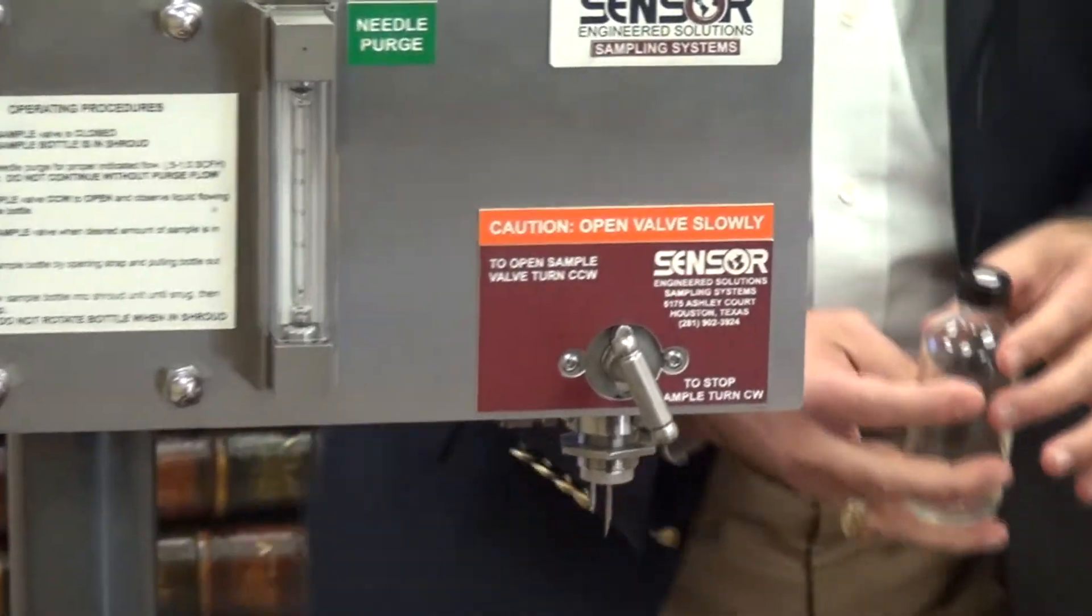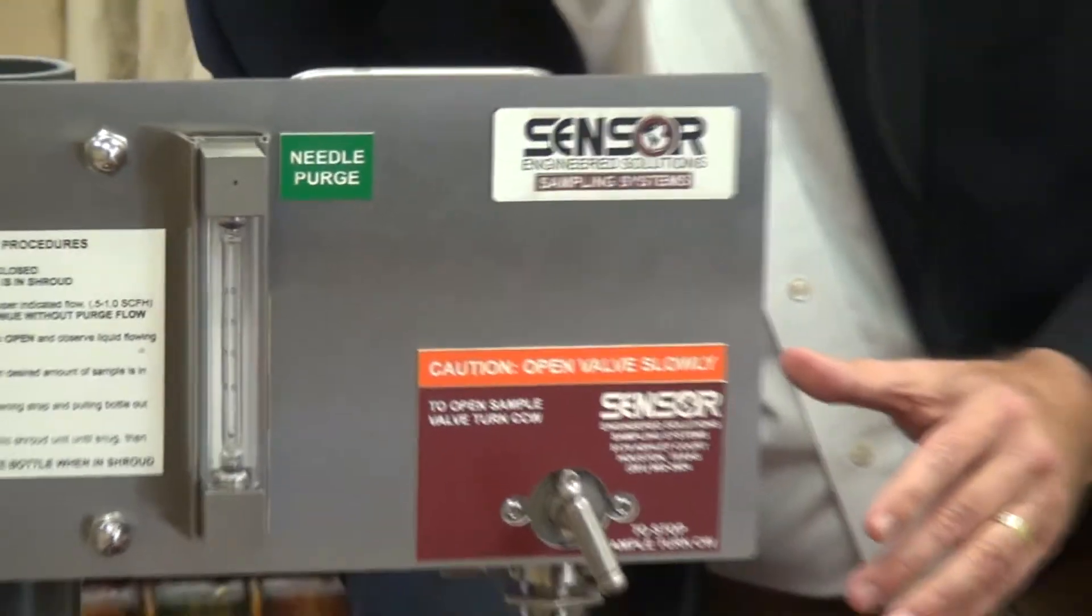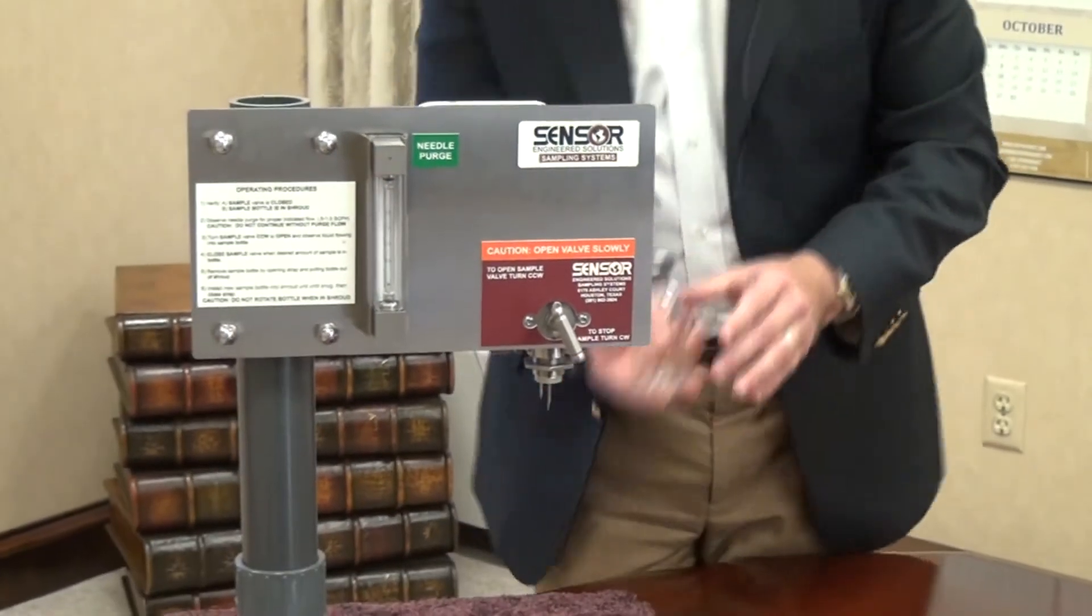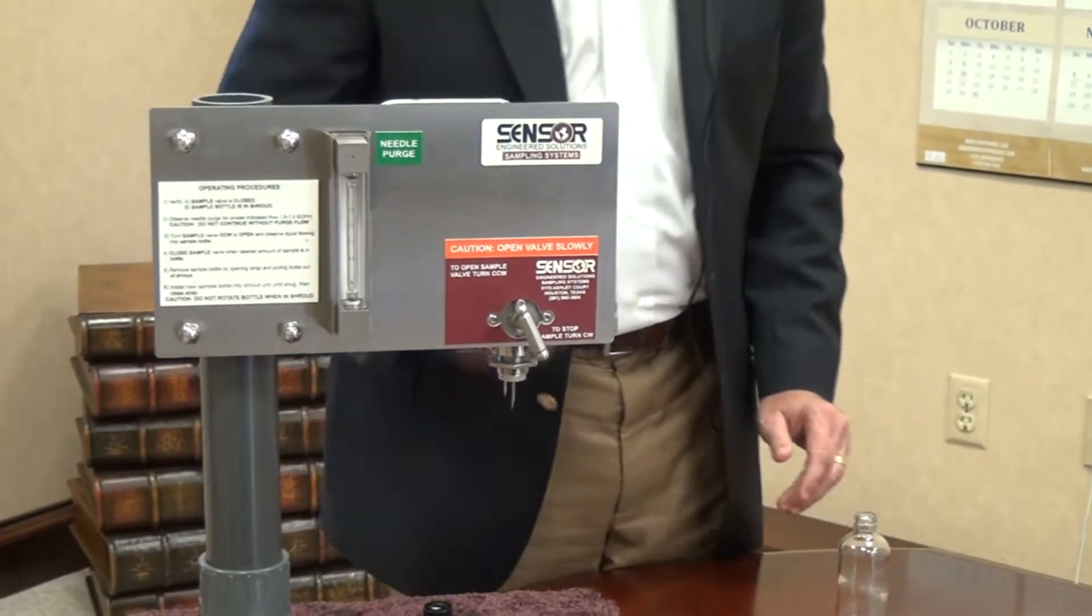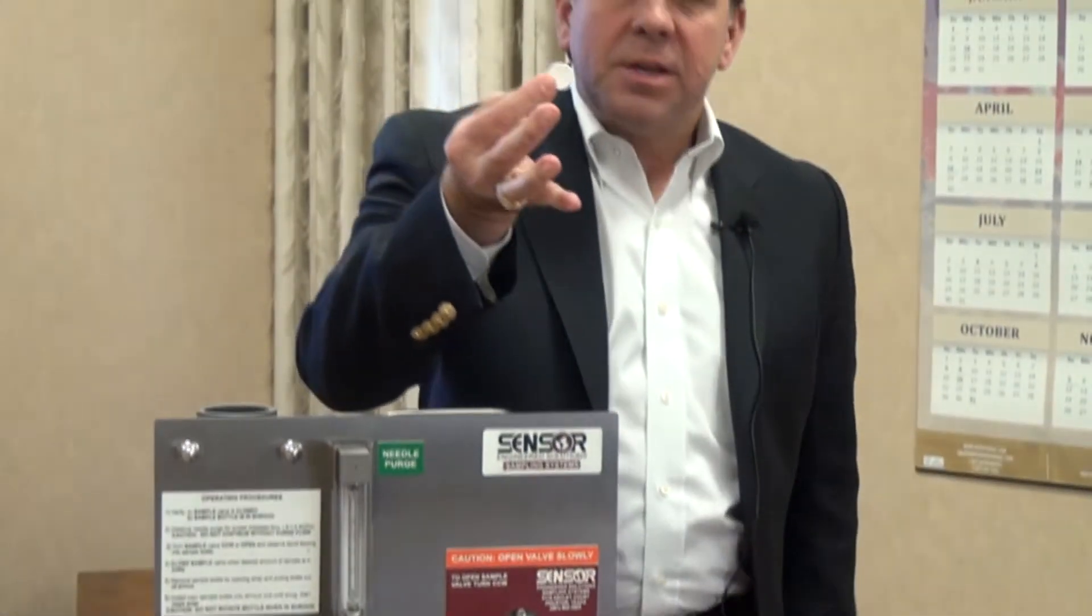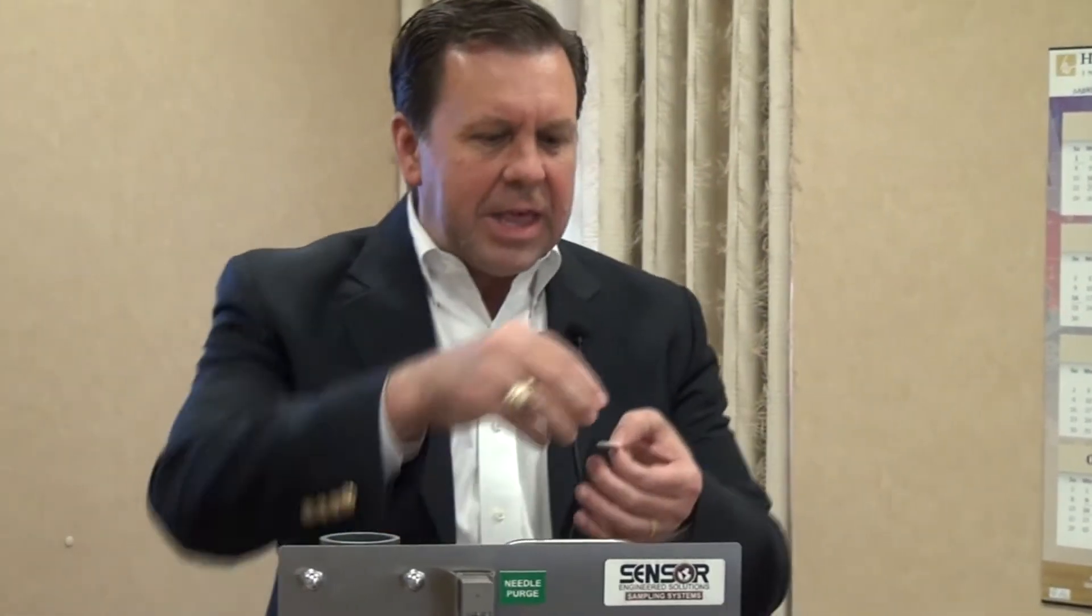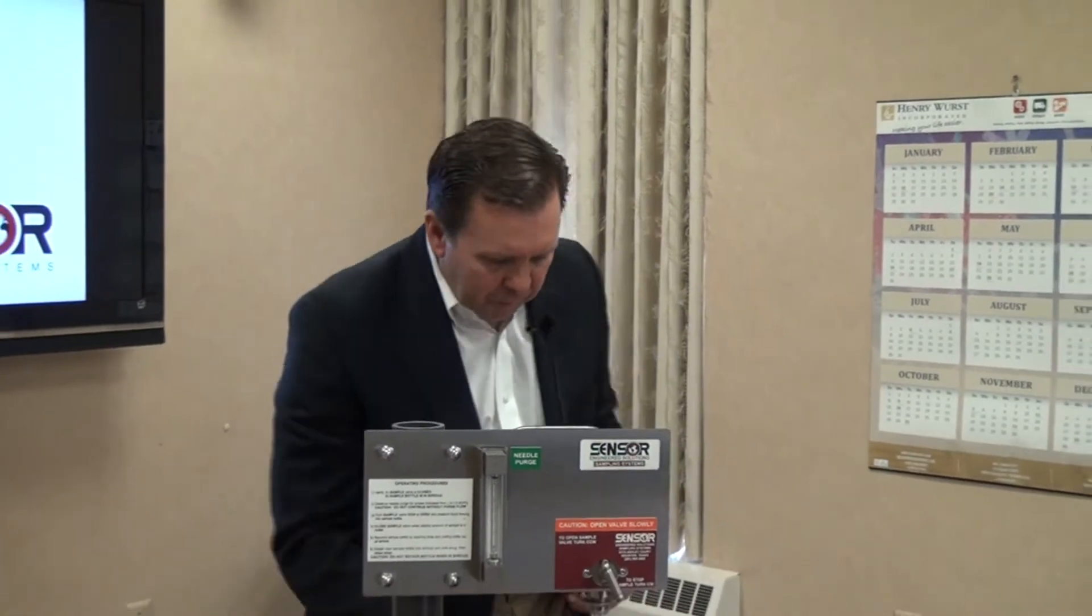So when the operator is ready to take a sample, they'll put the bottle on the system. Those needles will pierce what's called a septa. The septa is a Teflon-coated rubber which is self-healing, meaning as the needle is extracted, the Teflon will close up to reseal the bottle to prevent the vapors from escaping.